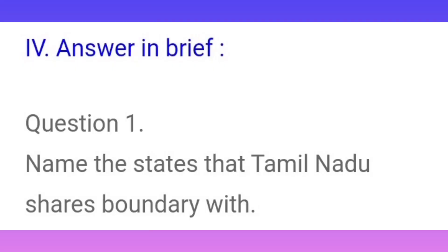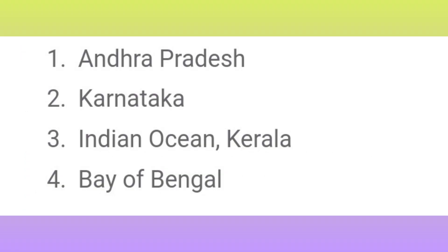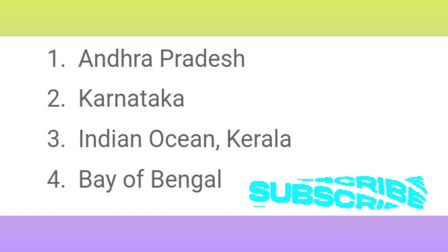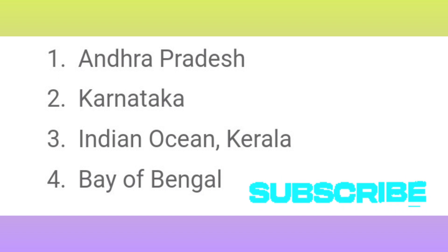Answer in brief. Question 1: Name the states that Tamil Nadu shares its boundaries with. Answer: First, Andhra Pradesh. Second, Karnataka. Third, Kerala and the Indian Ocean. Fourth, Bay of Bengal.